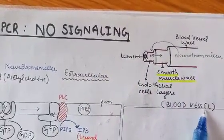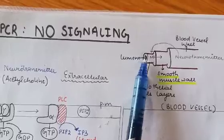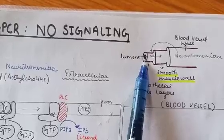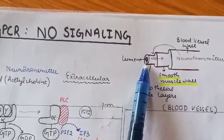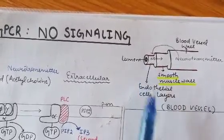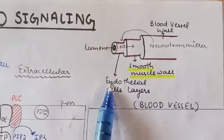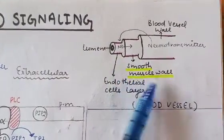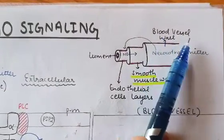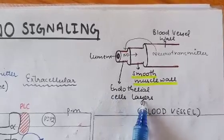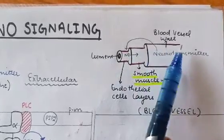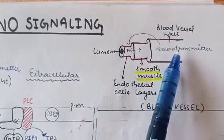The blood vessel is formed of three different layers. The lumen is the space in which blood is present and carried, and this lumen is covered by three layers. The innermost layer is called the endothelial cell layer. Next to it is the smooth muscle wall, which is the middle layer, and the outermost layer is the blood vessel wall. So the blood vessel wall, smooth muscle wall, and endothelial cell layer together compose the blood vessel. Nitric oxide signaling occurs across all of these layers for vasodilation.